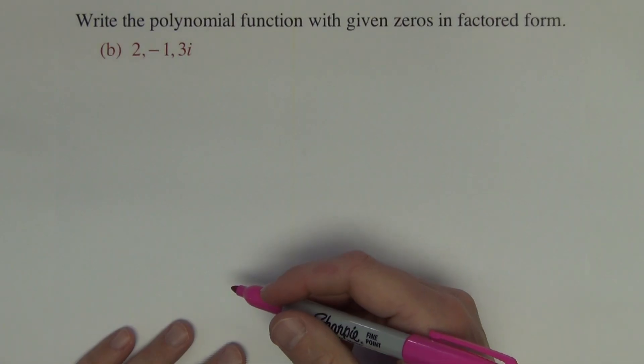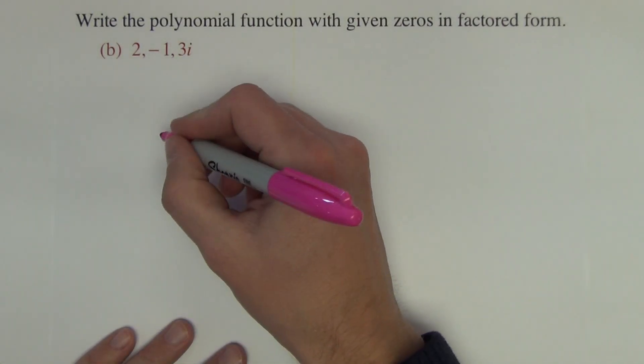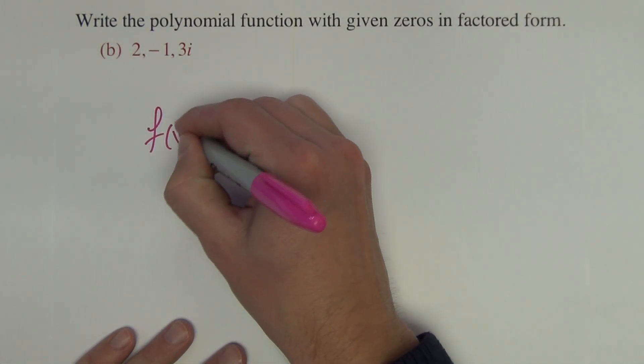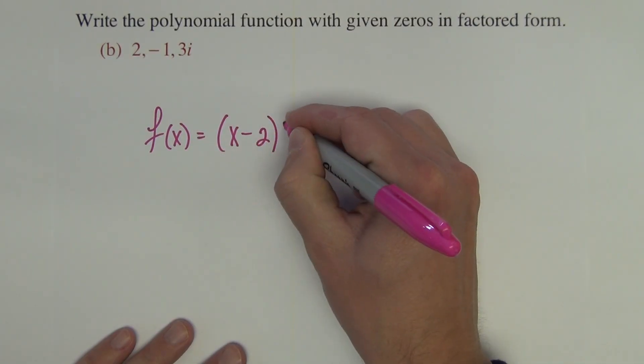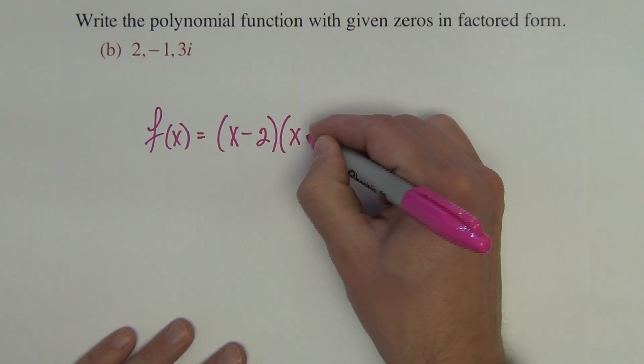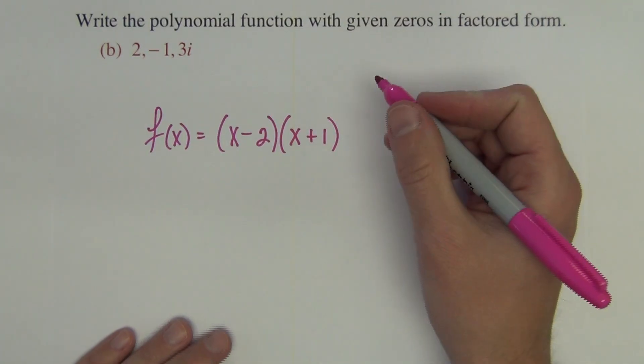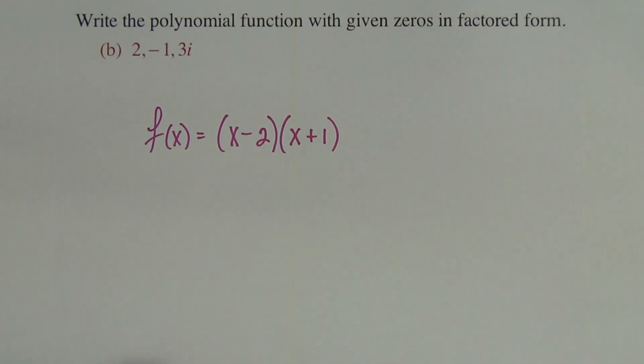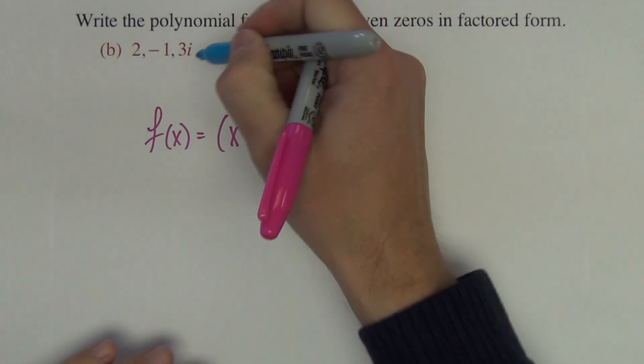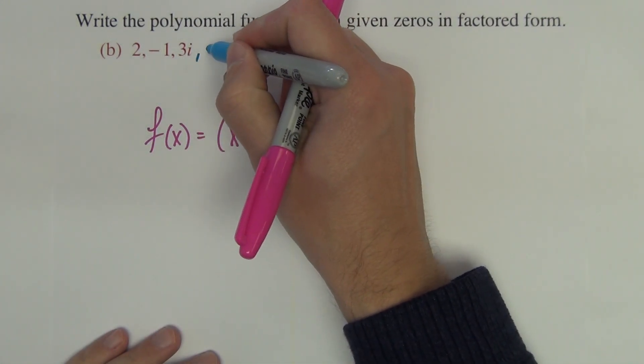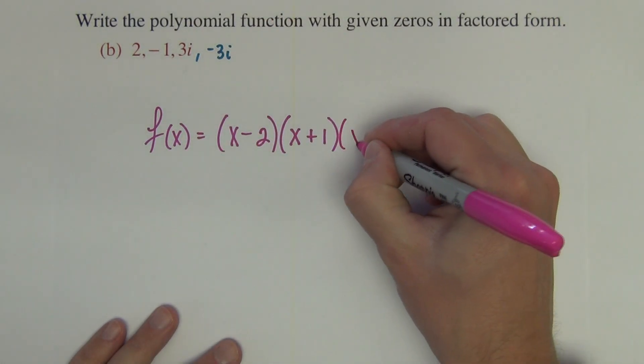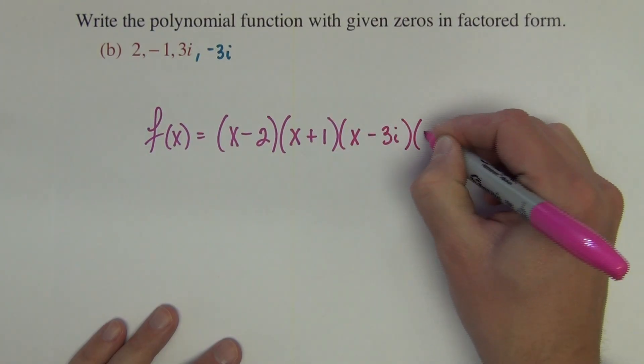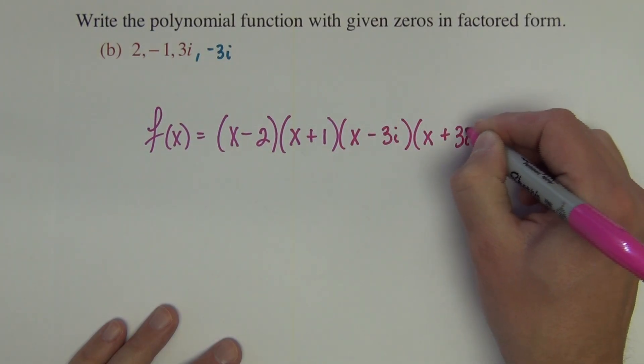The next example of the same directions. Write the polynomial function with given zeros in factored form. So we have a positive 2, which is an x minus 2 factor. A negative 1, which is an x plus 1 factor. And here is the tricky part. The factor 3i actually hides another zero of negative 3i. So we actually have x minus 3i and x plus 3i.